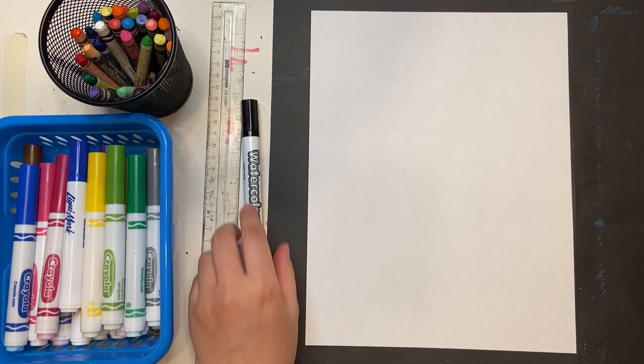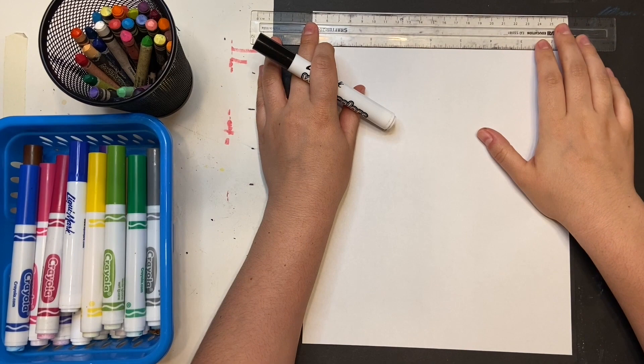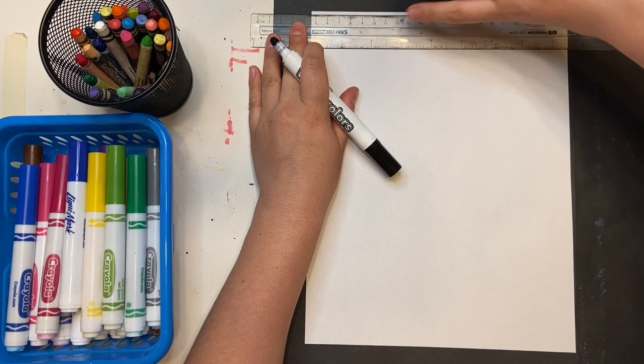In addition to a piece of paper, markers, and crayons, you'll need a ruler and a black marker. Start by drawing a border around your white piece of paper.